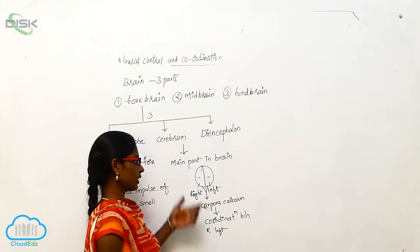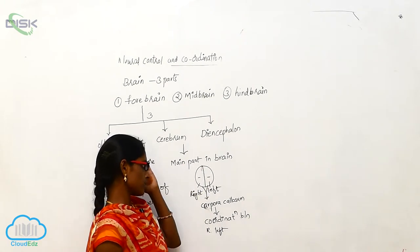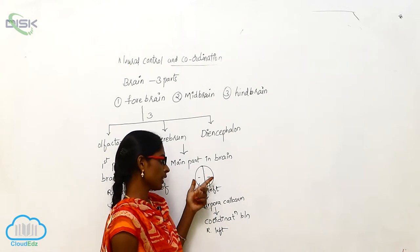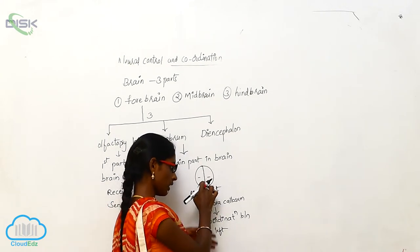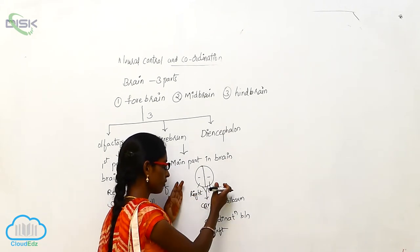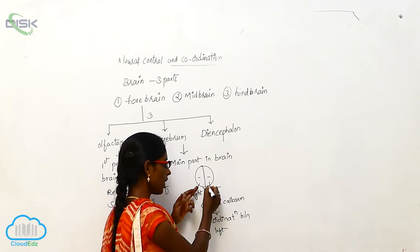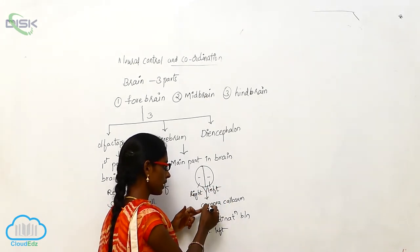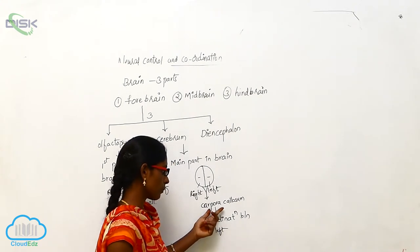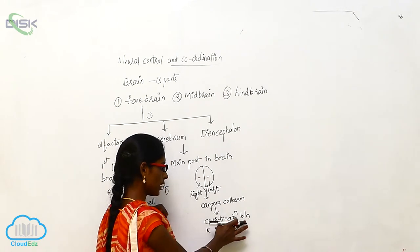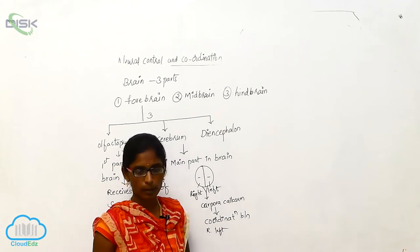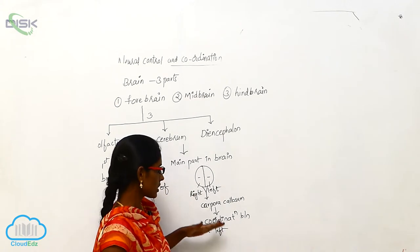The cerebrum is the main part of the brain, divided longitudinally into left and right hemispheres. These are connected by the corpus callosum, which brings coordination between the right and left hemicerebrums.